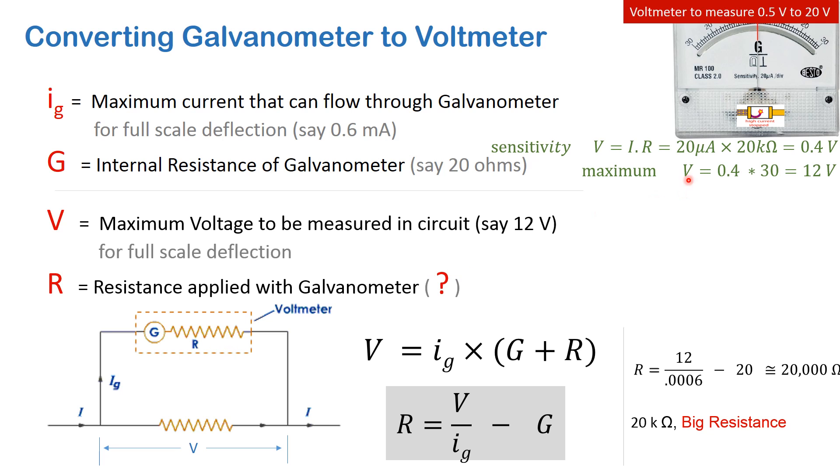The sensitivity of this voltmeter will be 0.4 volts, which means every division measures 0.4 volts, and the galvanometer turned voltmeter can measure maximum 12 volts using this arrangement.